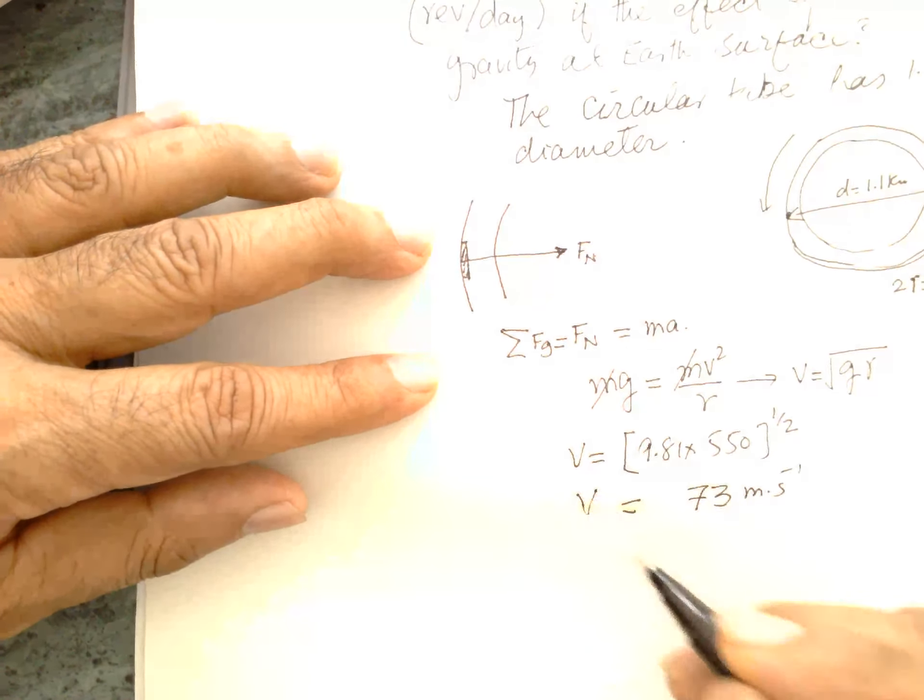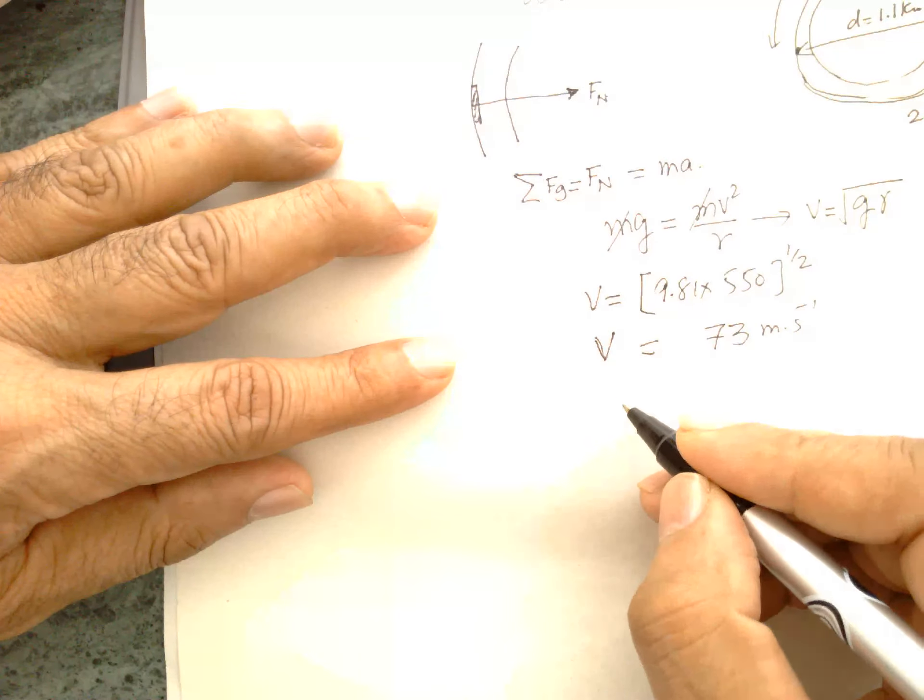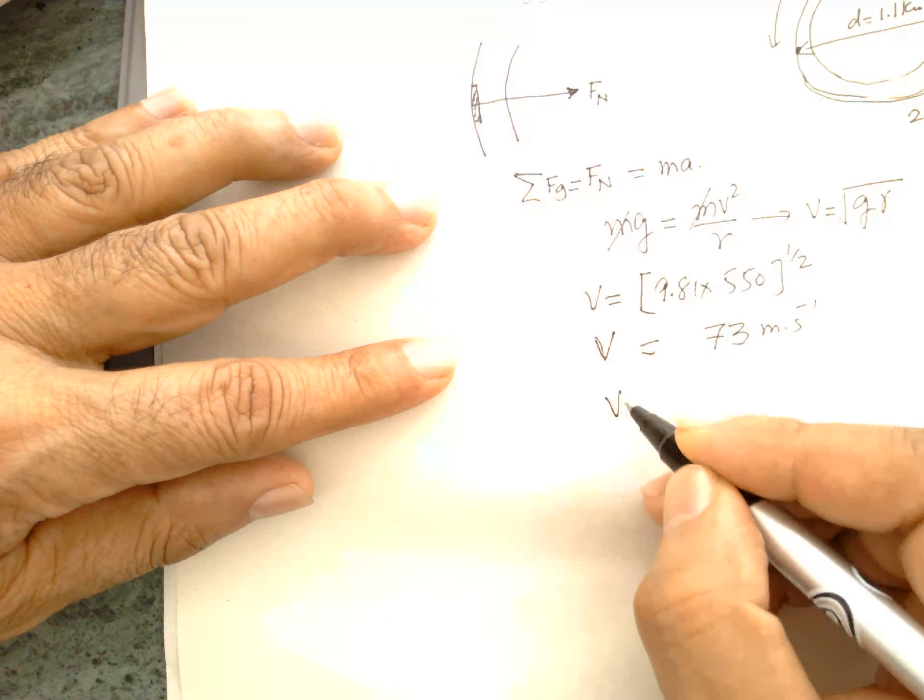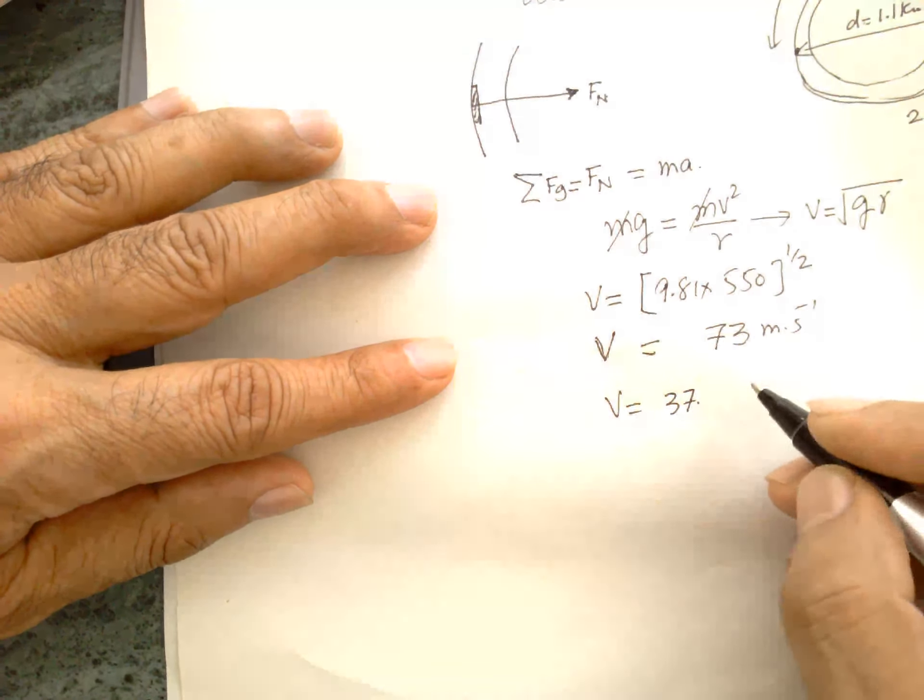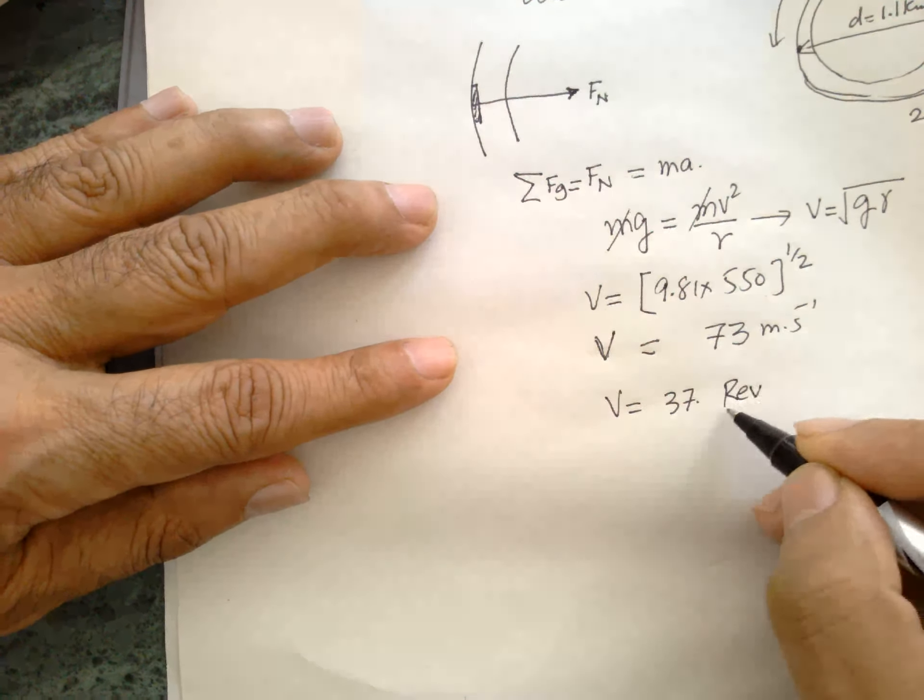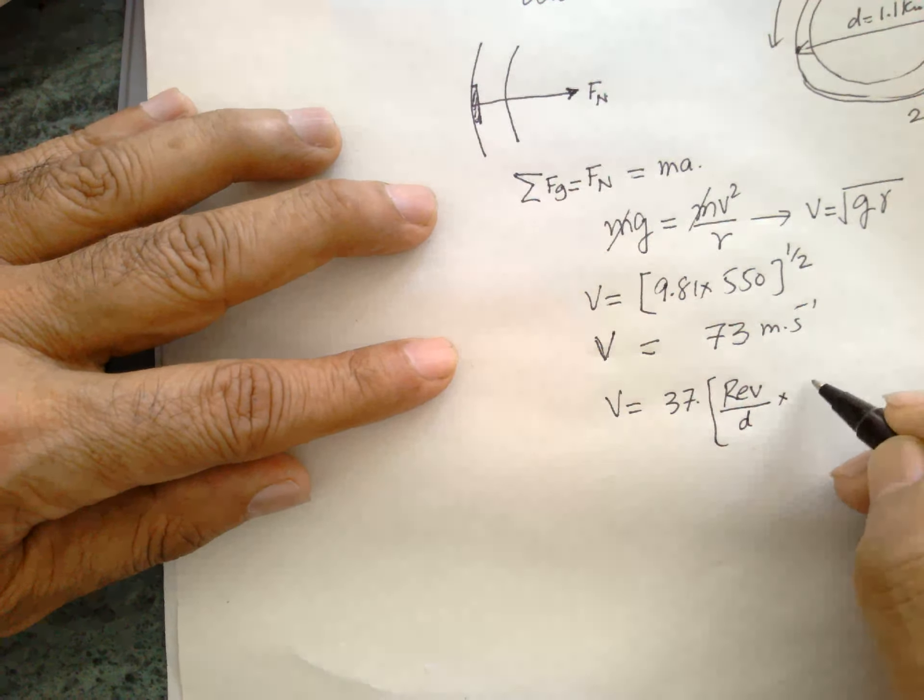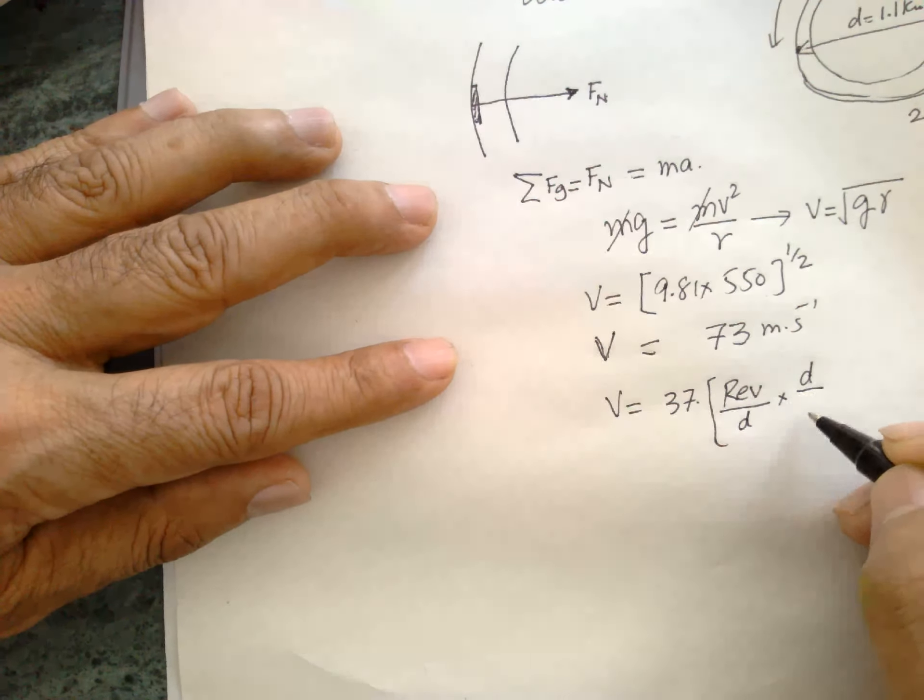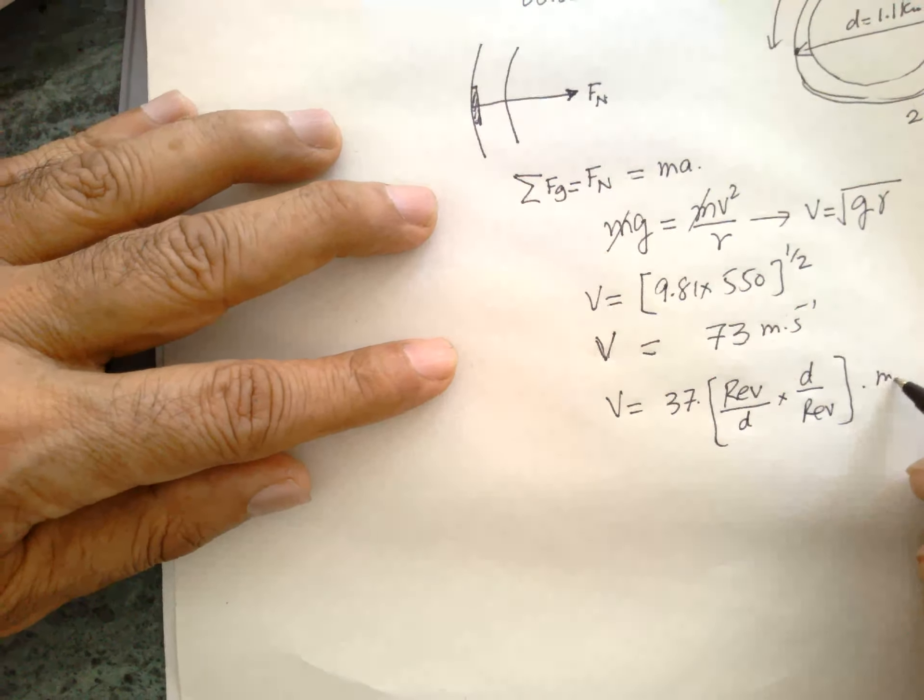We can convert this speed into frequency. So V is equal to 73 meters per second. This will be revolution per day. That means day by revolution, we have to solve this. This is meters per second.